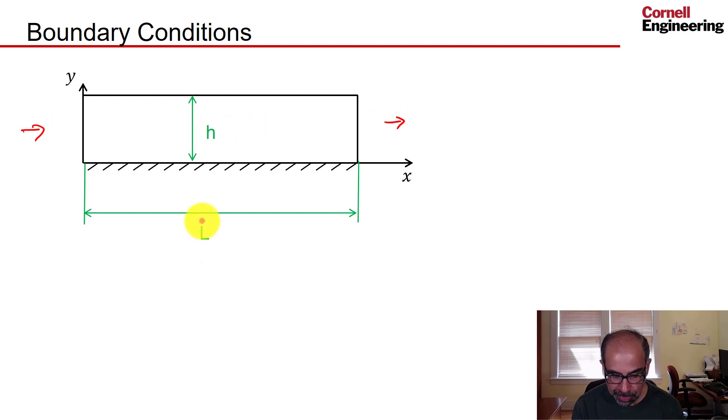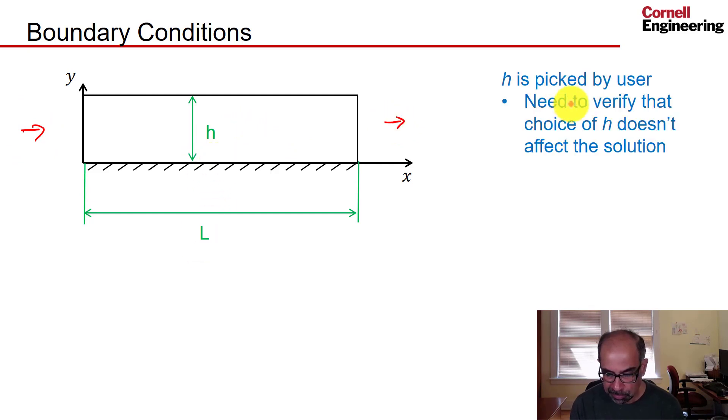H is picked by the user. We need to pick it far enough away from the flat plate, and we need to verify that our choice of H doesn't affect the solution. You do this by moving H, increasing H for instance, and redoing the solution.